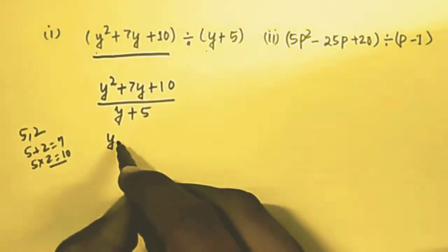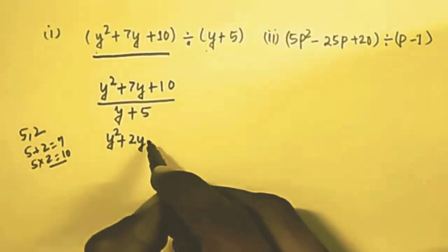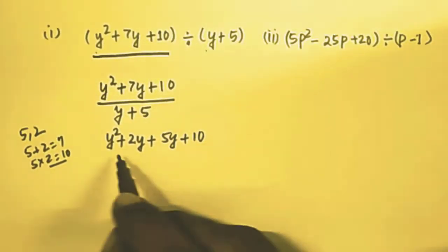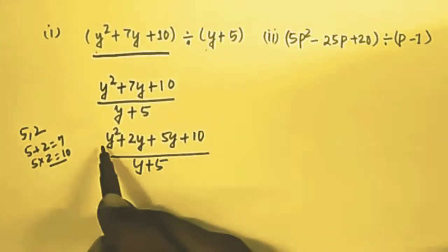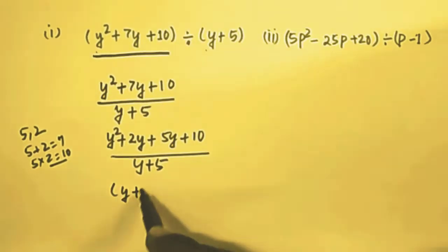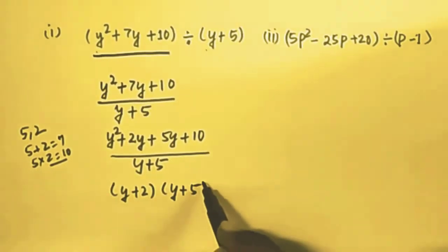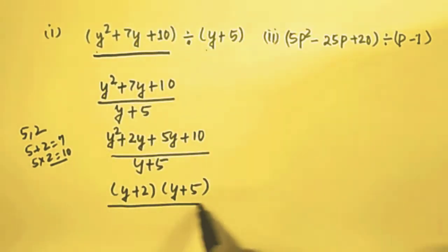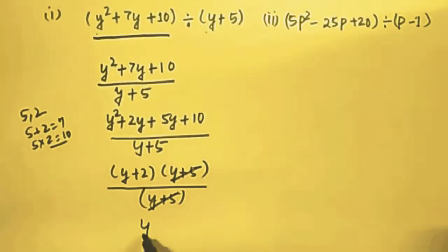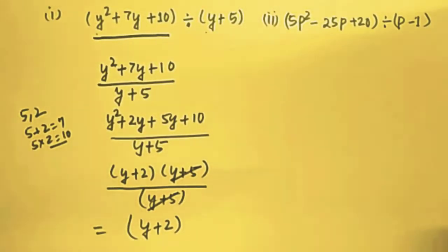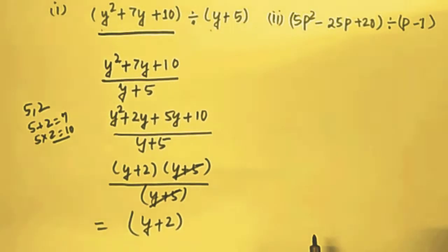Expanding: y² + 2y + 5y + 10 divided by (y + 5). Factorizing gives (y + 2)(y + 5) divided by (y + 5). This (y + 5) and (y + 5) cancel out, and the remaining part y + 2 is the answer. Whenever you get a question like this, factorize the first expression and then divide by the denominator.